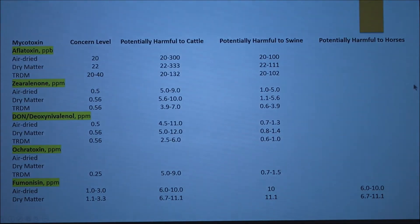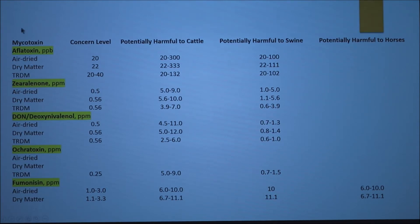Here's a chart showing the different concern levels and potentially harmful levels for cattle, swine, and horses. Notice that aflatoxin is measured in parts per billion while the rest of the mycotoxins are in parts per million.